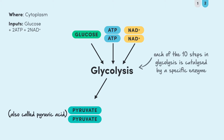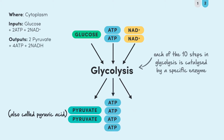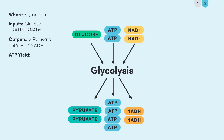Don't worry about learning all the names. Just make sure you appreciate that without each of these enzymes, glycolysis and so respiration couldn't happen. Glycolysis also produces four molecules of ATP and two molecules of NADH. So to work out ATP yield, we need to find out how many molecules of ATP we've got coming out of this reaction overall. We've got two molecules of ATP going into glycolysis and four molecules of ATP coming out, so we've got a net ATP yield of four minus two, which equals two molecules of ATP.